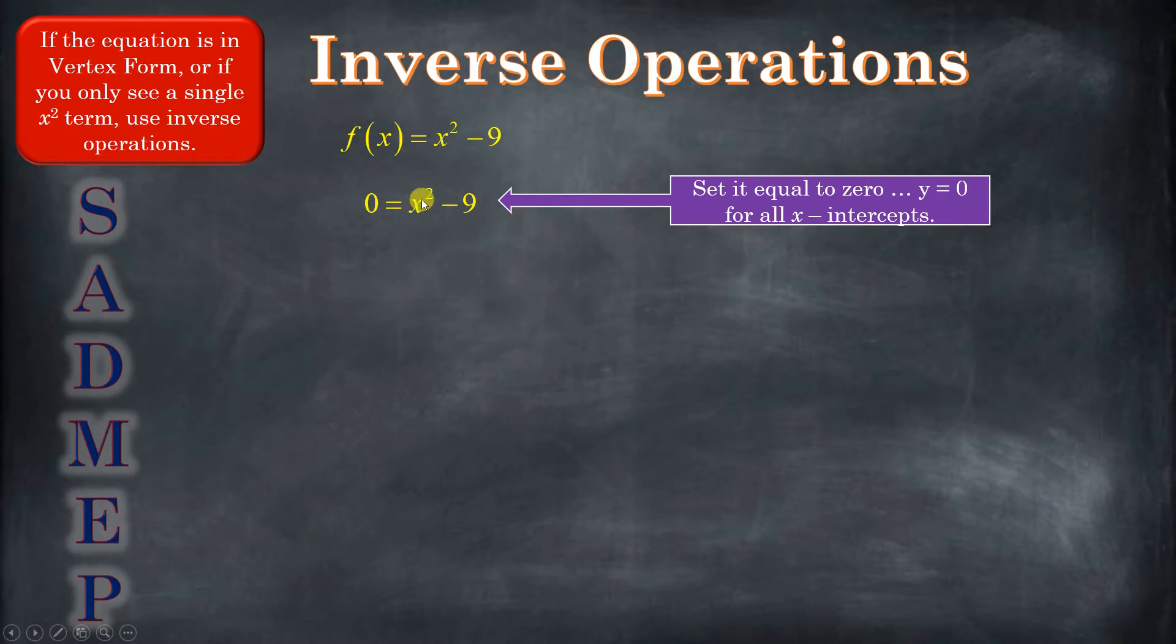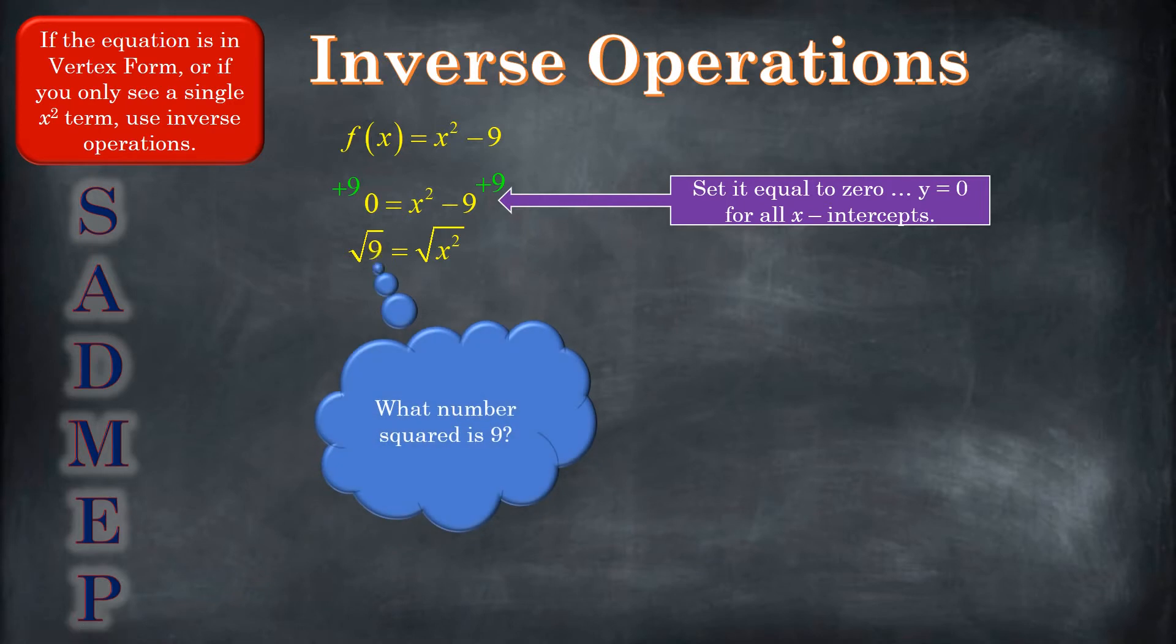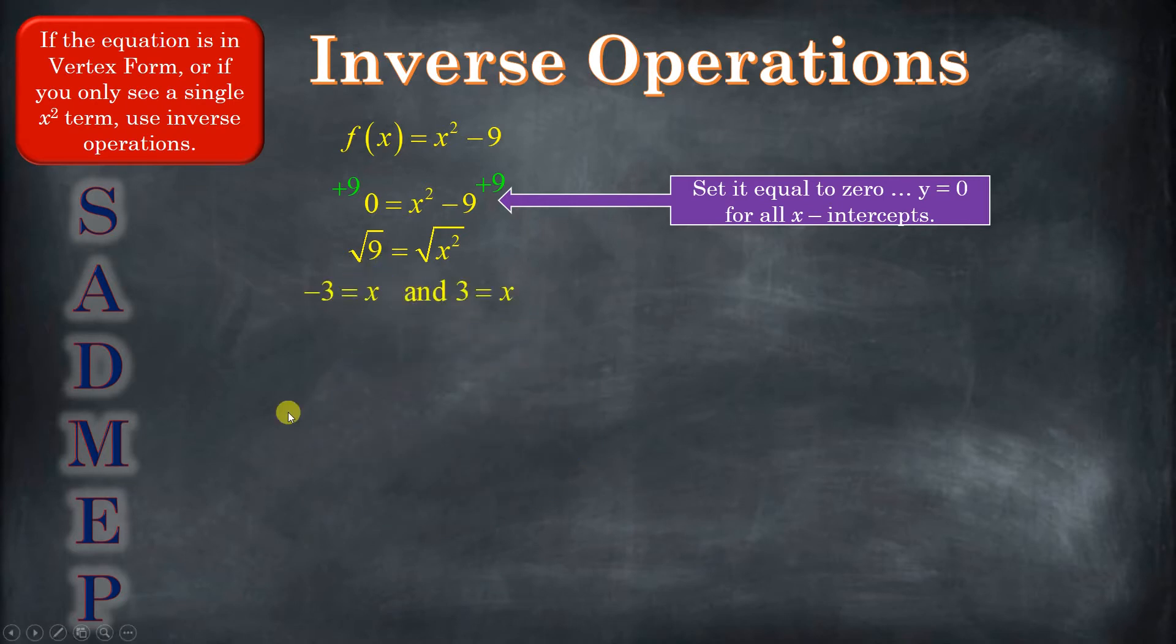So our goal, we want x by itself. So we have to get rid of this. It's a two. It's a square. And there's nine. It's negative, and it's subtracting. So we're going to do the subtraction first. We add nine to both sides. This makes zero, and that's nine equals x squared. Now, the two is an exponent. The opposite of square is square root, so we take a square root of both sides. Now, this right here, this is really asking, hey, what number times itself? The number squared is nine.